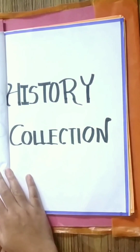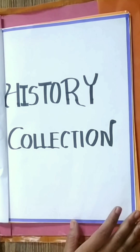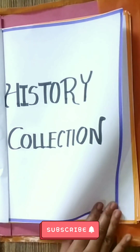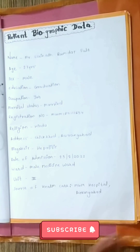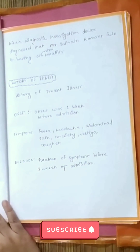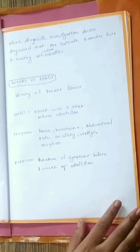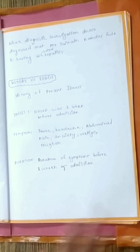This video is about nursing care plan — specifically a nursing care plan on hepatitis. The pattern to write a nursing care plan: firstly, you have to write history collection, which includes patient biographic data. By clicking the pause button, you can easily write it or read it.